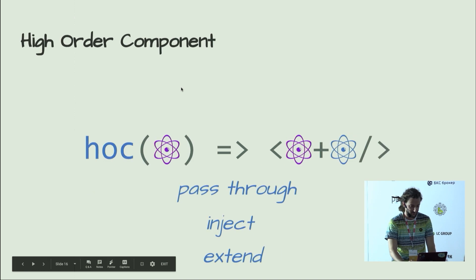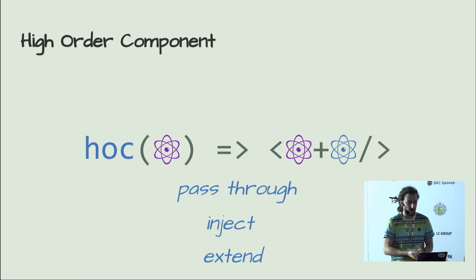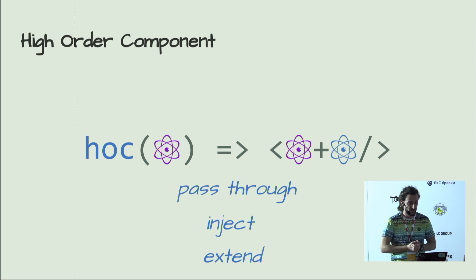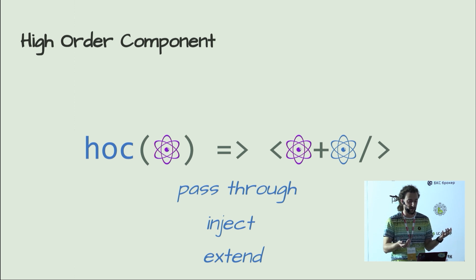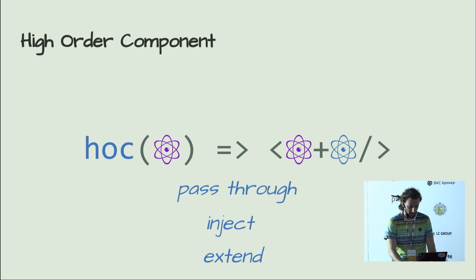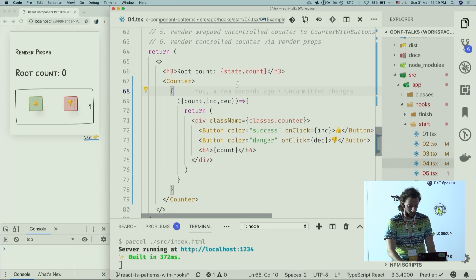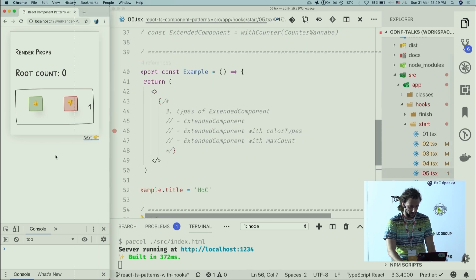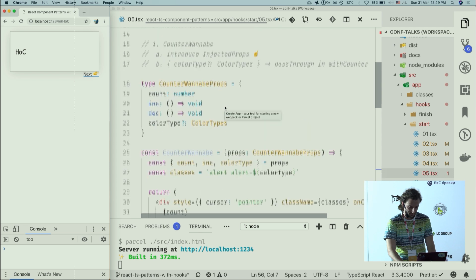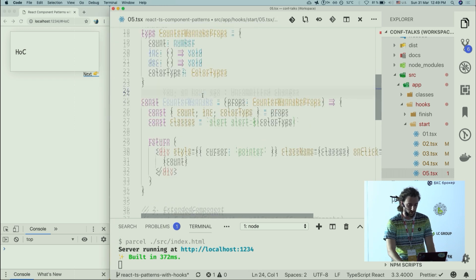Next pattern: Higher-Order Component. What is it? It's just a higher-order function — a function that accepts a function and returns something new. In React, it's a function that takes a component and returns a new component with enhanced behavior. It passes through the original props and can inject new behavior — kind of like dependency injection. Let's implement it — this is one of the most complicated patterns in TypeScript and React, but we can handle it.